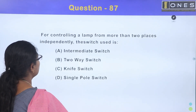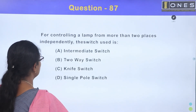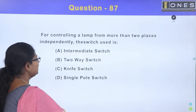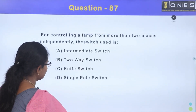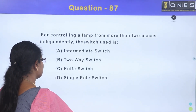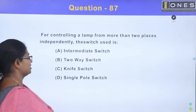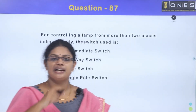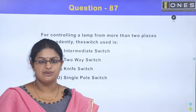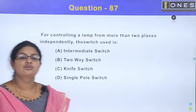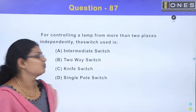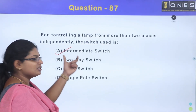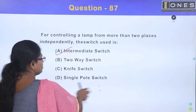For controlling a lamp from more than 2 places independently, the switch used is: Option A, intermediate switch; Option B, two-way switch; Option C, nice switch; Option D, single pole switch. For 2 places we use a two-way switch; for more than 2 places we use an intermediate switch. The answer is Option A, intermediate switch.